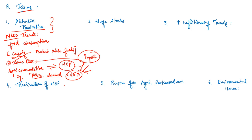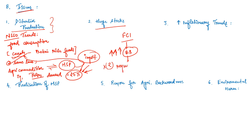Second issue is huge stocks. FCI accumulates buffer stocks that are now double the requirement — more than what is needed for the National Food Security Act, mid-day meals, and Anganwadi combined. Excess grain has been wasted and spoiled due to ill-equipped storage facilities.